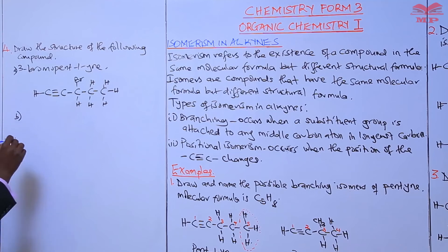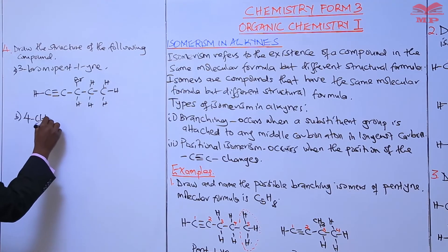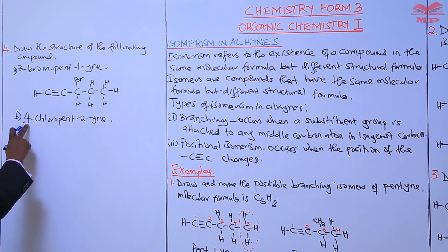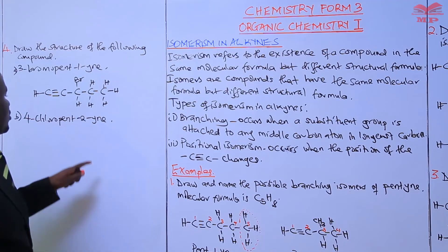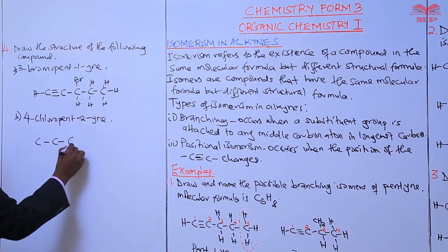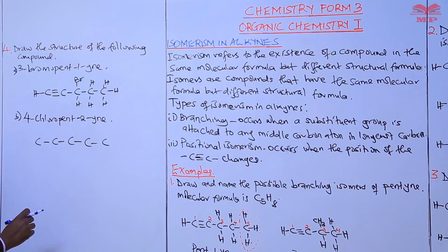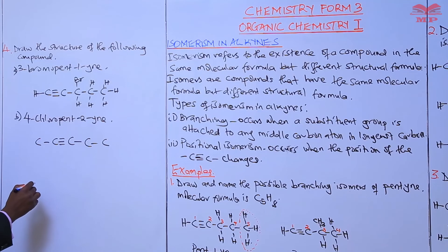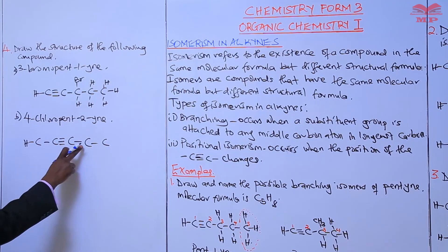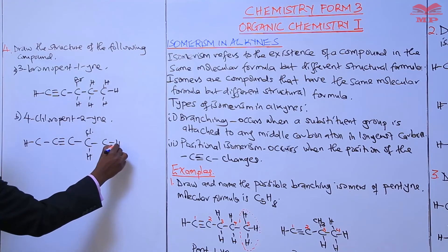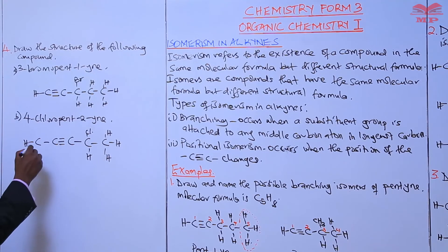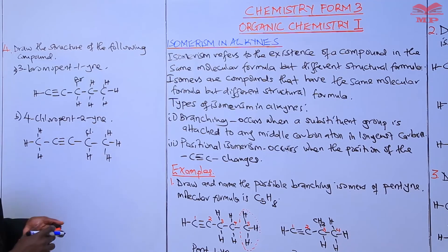Let's look at one more example: 4-chloropent-2-yne. We have a chlorine attached to carbon 4, the parent is pentyne with five carbons, and the triple bond is between carbon 2 and 3. Draw the five carbon atoms, place the triple bond between carbons 2 and 3, attach chlorine to carbon 4, and fill the remaining bonds with hydrogen atoms. That is the structure of 4-chloropent-2-yne.